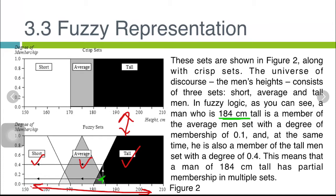With a degree of membership 0.1 here, and at the same time he is also a member of the tall men set with a degree of 0.4. This means that a man of 184 cm tall has partial membership in multiple sets.